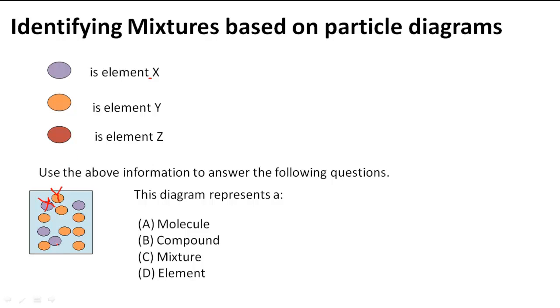What I can notice though is that the X and Ys are free floating so they're not chemically combined together, except for this one down here which looks like X and Y are chemically combined. So we have a compound that is chemically combined X and Y, and we have free floating elements X and Y.